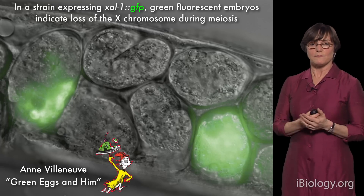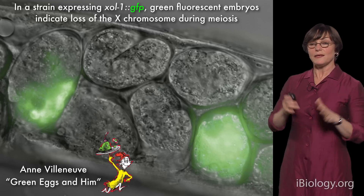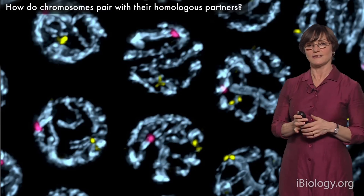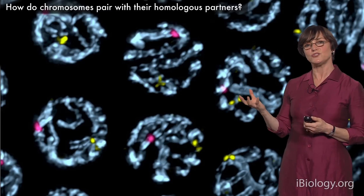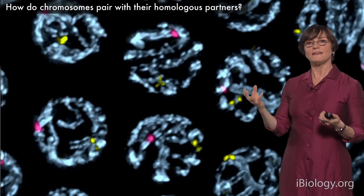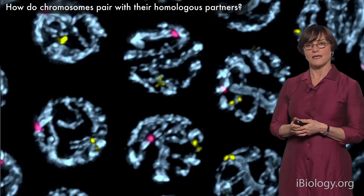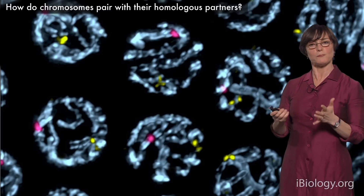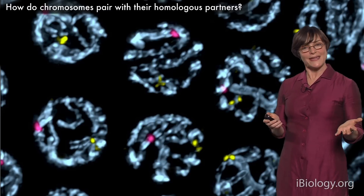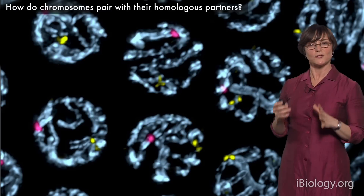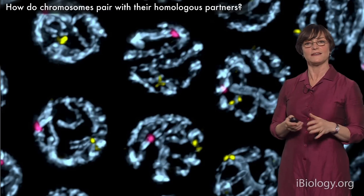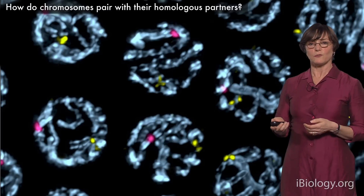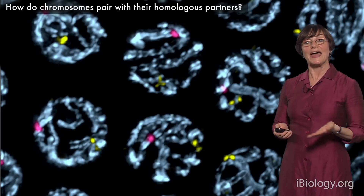One of the key things my lab is interested in — and many people in the field are interested in — is the process of homolog pairing. It's unique to meiosis. How do chromosomes find their partners inside the nucleus, and what tells them that this is your partner and you should pair up? I can't fully answer those questions yet, but I'll share what we've learned, starting with something about how chromosomes don't pair.